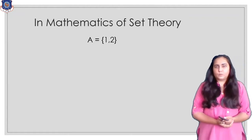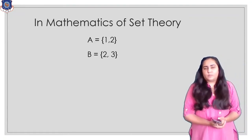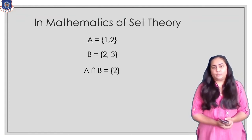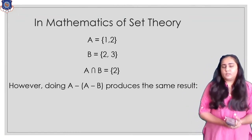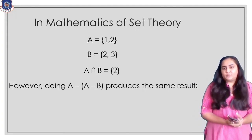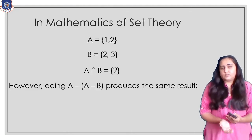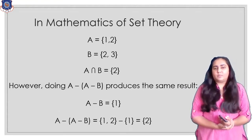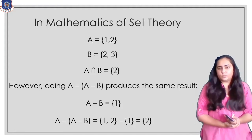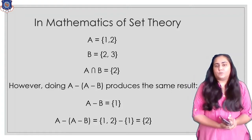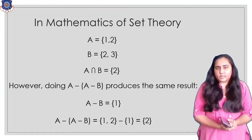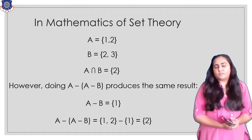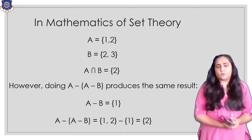If you have set A with elements {1, 2} and set B with elements {2, 3}, then A intersection B gives you {2} because that is common between A and B. You can also perform this with set difference: A minus (A minus B) gives you the same result. So that's why intersection is an additional operation and not a fundamental one — whatever you can do with intersection you can do with set difference.